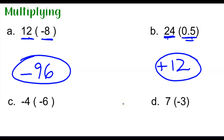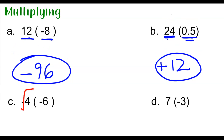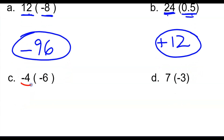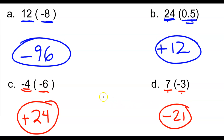You try C and D all by yourself. In example C, negative 4 and negative 6 are both the same sign, so the answer is going to be positive. 4 times 6 is 24. In D, the two numbers are different signs, so the answer is going to be negative. 7 times 3 is 21, so the answer is negative 21. That's how you multiply two numbers with the same signs and different signs.